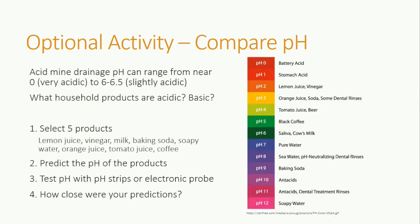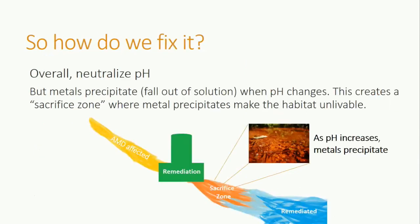How close were your predictions to the actual pH measurements? Remember, the pH of acid mine drainage can range from 0 to 6.5. So how do land managers and researchers fix streams affected by acid mine drainage? Overall, the goal is to neutralize the pH, meaning bringing the pH near 7.